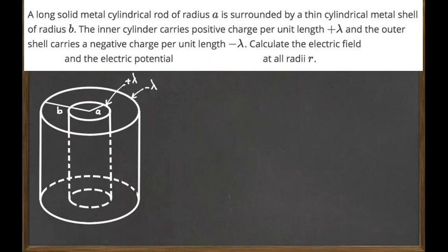To calculate the electric field we separate this problem into three regions. The first region is the inner region of the metal rod. Since we know that inside every metal the electric field is zero, we don't need to calculate it — it is right away equal to zero when r is less than a.